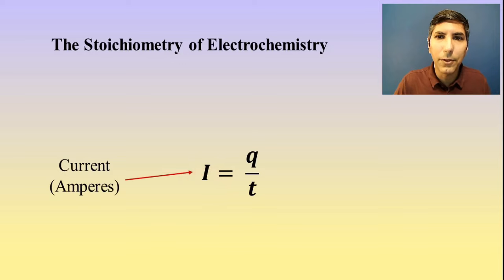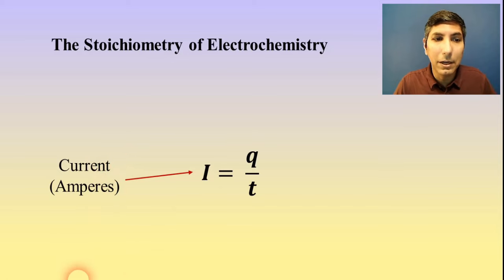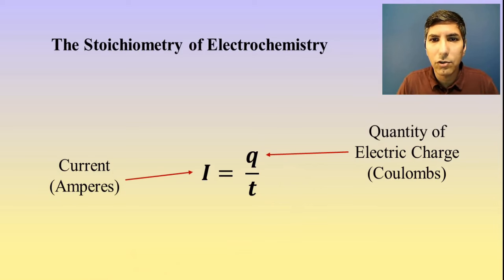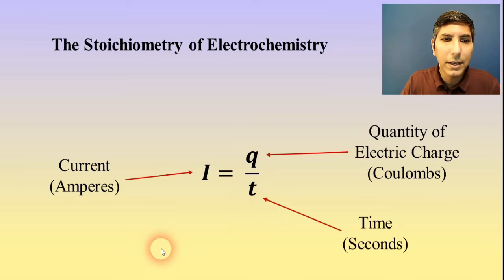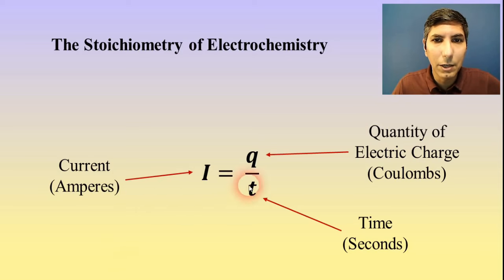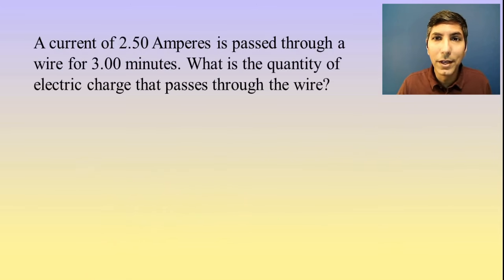I represents the current — that's from physics and current is measured in amperes, sometimes abbreviated amps. Q represents the actual quantity of electric charge, the actual flow of how many electrons have flowed into the reaction, and this is measured in coulombs. T stands for time — how much time has elapsed over the course of the reaction — and that's measured in seconds. So current equals electric charge over time in seconds.